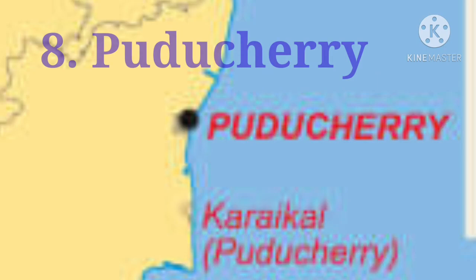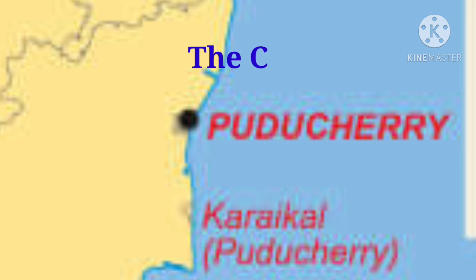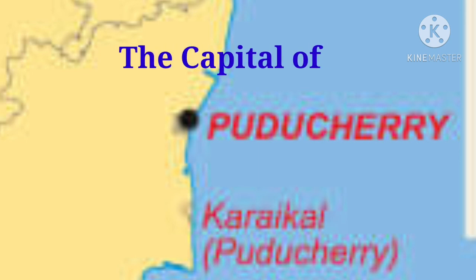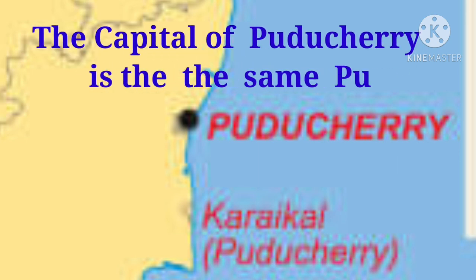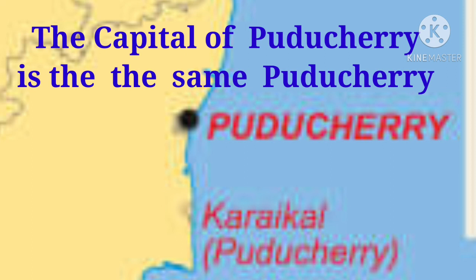The capital of Puducherry is Puducherry itself. It is also known as Pondicherry. The land area of this Union Territory is 479 km².